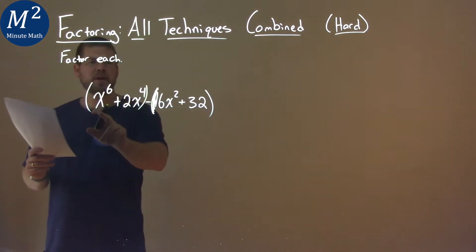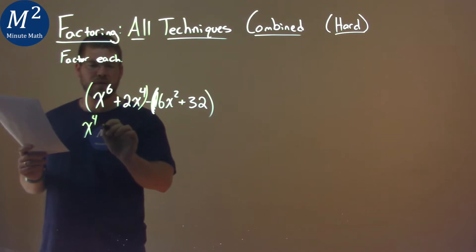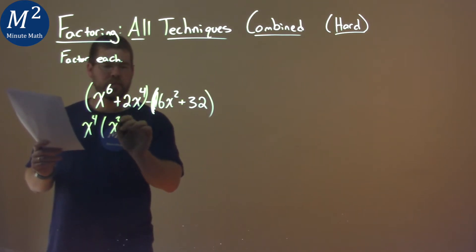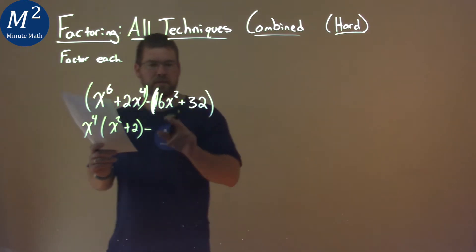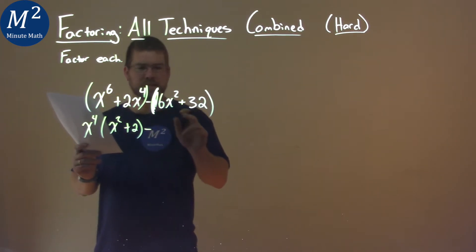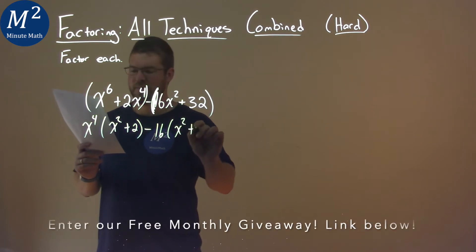Now, pulling out common terms, an x to the 4th is in both parts of the beginning. So we have x to the 4th here, and we're left with an x squared plus 2. Minus. The second part, we can pull out a 16. And in doing that, we're left with x squared plus 2.